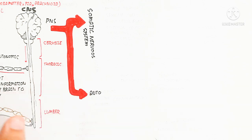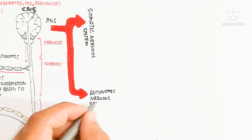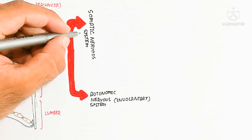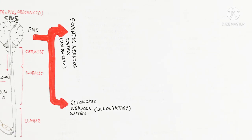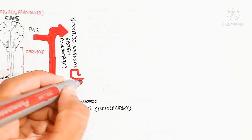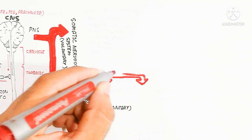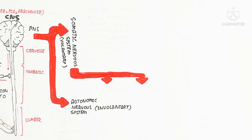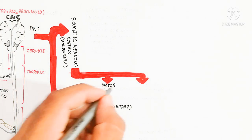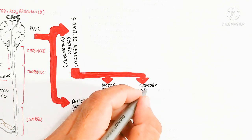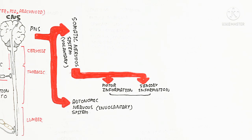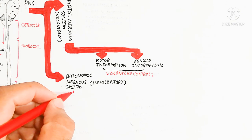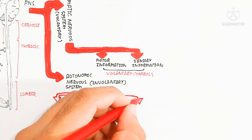The somatic nervous system carries both motor information and sensory information, enabling voluntary control. Motor information is carried by motor neurons to the effector muscles via the neuromuscular junction. The neuromuscular junction is where the muscle fiber is attached to the neuron — it is the synaptic gap — and it uses polarization and depolarization for contraction of the muscle.